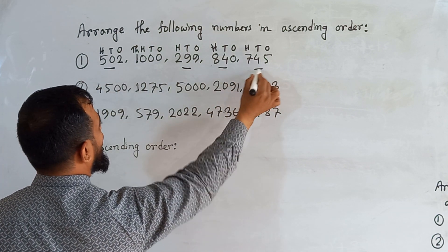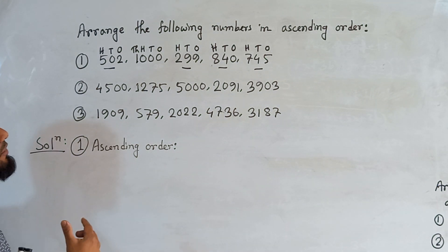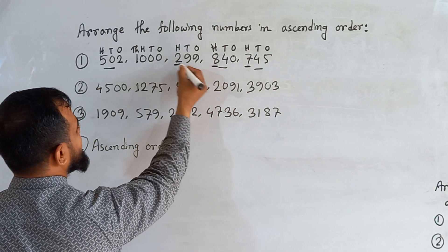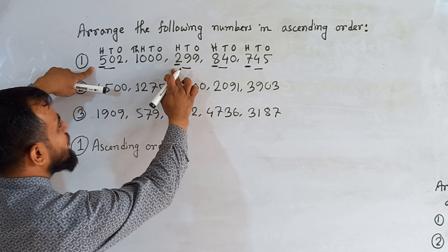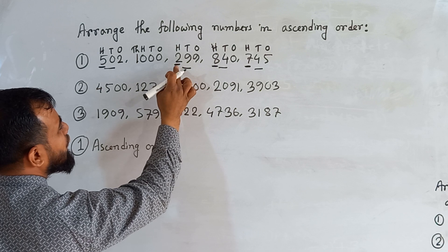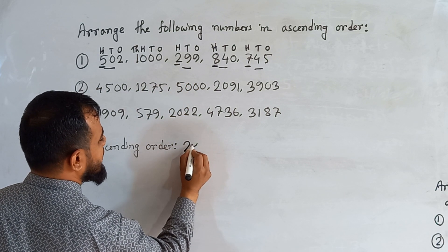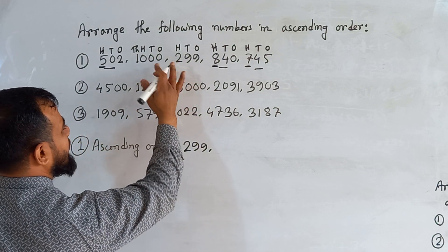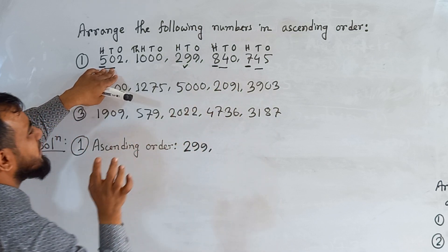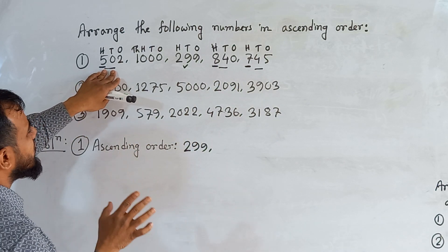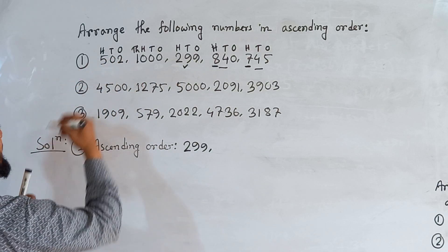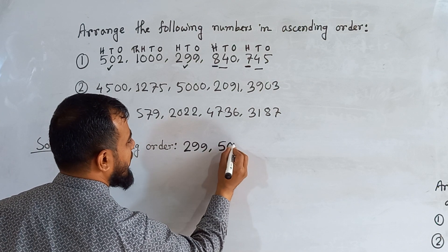Now compare the remaining numbers. The highest place value for all others is hundreds. In the hundreds place we have: 7, 8, 2, and 5. Among these, 2 is the smallest, so 299 will be our first number in ascending order. Next, from the remaining hundreds digits — 5, 8, and 7 — 5 is the smallest, so 502 is our next number.